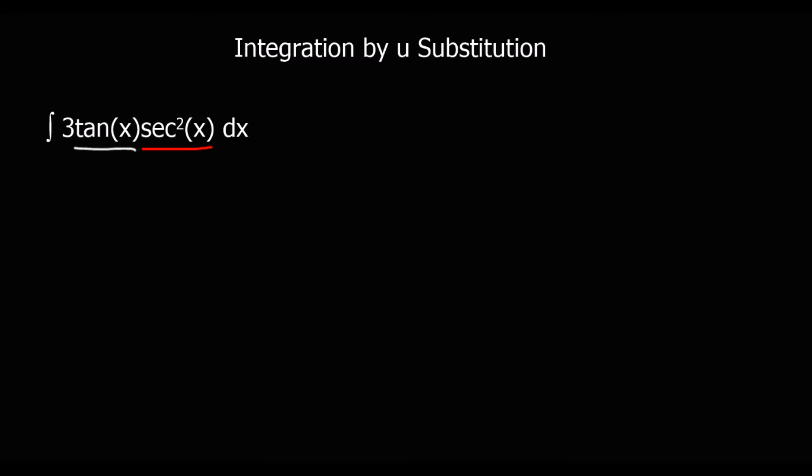Here's another case. We've got a function — tan x — and we've got its derivative, sec squared x. So we've got a function and its derivative. It doesn't matter that there's a multiplier, a 3 — we can ignore anything it's multiplied by. As long as we've got a function and its derivative, we can ignore any constant. So we're going to say u is tan x, and du/dx is sec squared x.